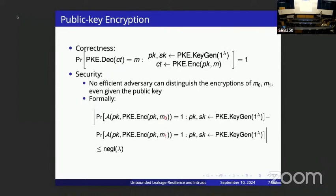Let me quickly introduce public key encryption. In public encryption, we have a public key that lets you encrypt messages and a secret key that lets you decrypt ciphertexts, with basic correctness. Our security notion says that given only the public key and a ciphertext encrypting some message M0 or M1, the adversary should not be able to distinguish between these ciphertexts.